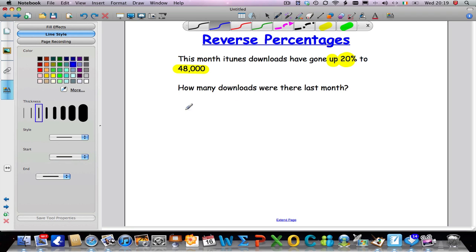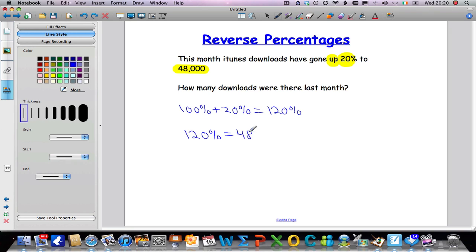Now, if I know that the original amount of downloads or the amount of downloads last month must have been 100%. And they've gone up by 20%. Well, if they've gone up, that means I must add on 20%. So that means the new amount must be 120% of what the original was. So I can safely say that this 48,000 is 120% of what we had. So 120% is 48,000.